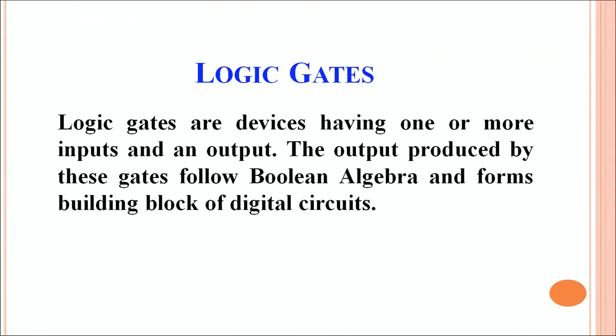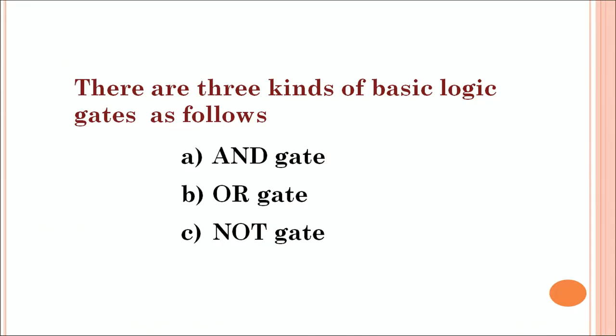Different mathematical operations can be performed using digital signals, and logic gates help us perform these operations. Logic gates are devices which have one or more inputs and an output. The output is produced using Boolean algebra, forming the basic building block of digital circuits. The three basic logic gates are the AND gate, OR gate, and NOT gate. Today we will discuss the AND gate in detail.